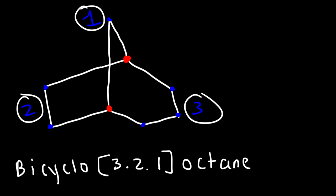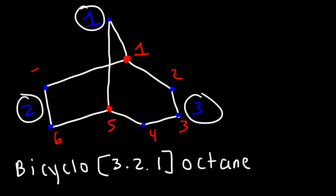To number it, we're going to start with a bridgehead carbon, and we need to begin numbering the largest section first. So this is going to be two, three, four, five. And then the smallest section we're going to count last: six, seven, and then eight. So we have a total of eight carbons.